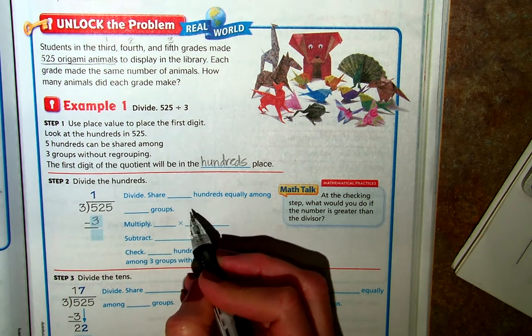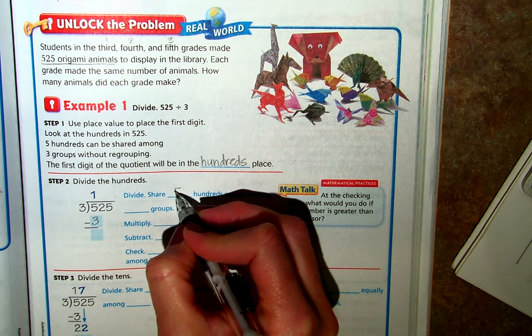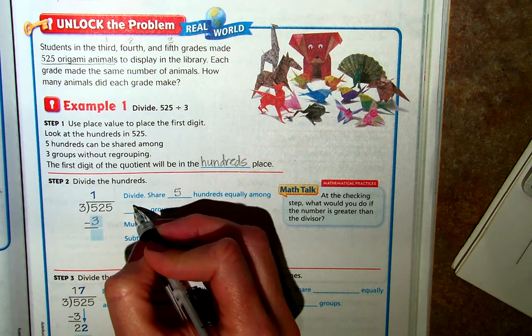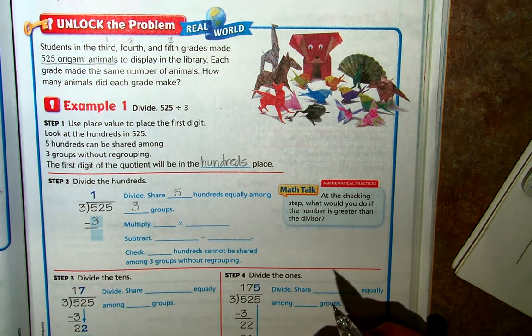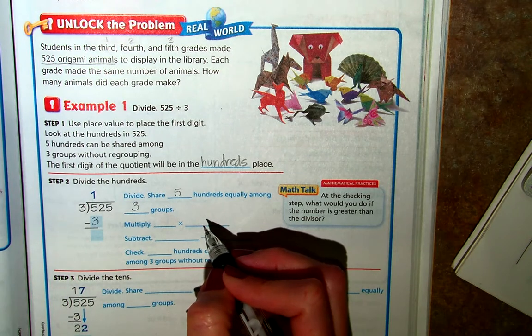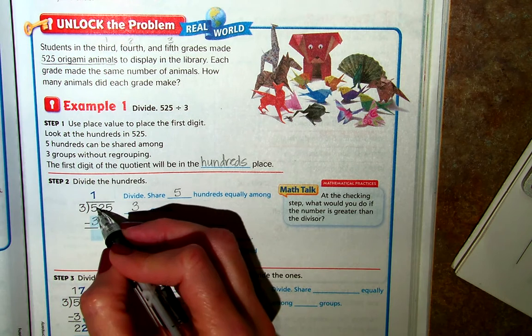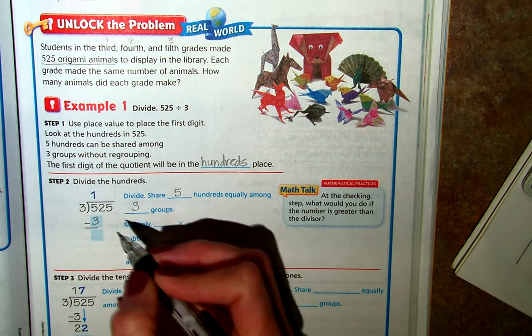We share five hundreds equally among three groups, and then we subtract 5 minus 3 is going to give me 2.